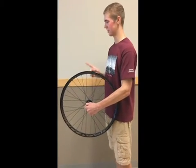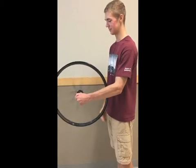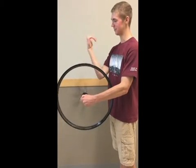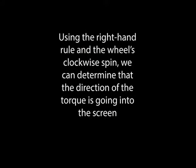The right-hand rule applies for both counterclockwise and clockwise spin. Using the right-hand rule and the wheel's clockwise spin, we can determine that the direction of the torque is going into the screen, or towards the wall.